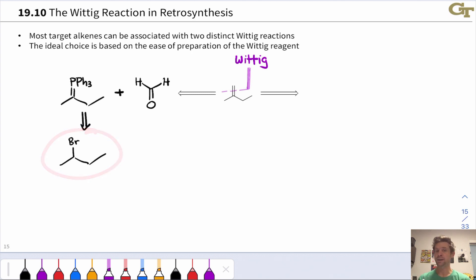We would treat this with PPh3 and then a strong base like butyl lithium to deprotonate it to create this phosphonium ylid. But that carbon is secondary, so reaction with PPh3 in an SN2 process is going to be relatively slow.